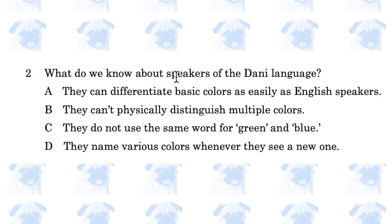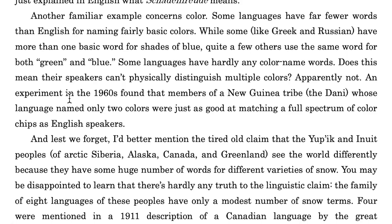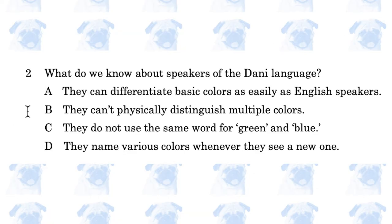Number 2: What do we know about speakers of the Dhani language? A: they can differentiate basic colors as easily as English speakers; B: they can't physically distinguish multiple colors; C: they do not use the same word for green and blue; D: they name various colors whenever they see a new one. An experiment in the 1960s found that members of a New Guinea tribe, the Dhani, whose language named only two colors, were just as good at matching a full spectrum of color chips as English speakers. So the answer is A.